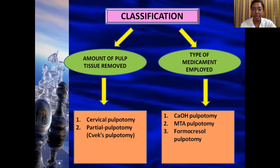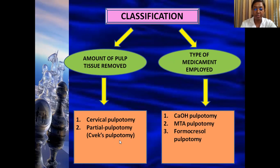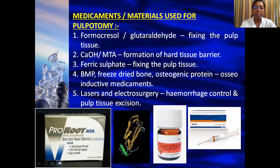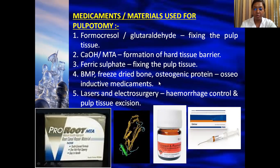Pulpotomy can be classified broadly into two categories: based on the amount of pulp tissue removed, and based on the type of medicament employed. Based on pulp removed, we have cervical pulpotomy, where the inflamed coronal pulp up to the cervical region is completely removed, and partial pulpotomy (also known as CVEK pulpotomy), where only part of the inflamed coronal pulp is removed. Based on medicament used, we have formocresol pulpotomy, MTA pulpotomy, or calcium hydroxide pulpotomy. Materials include formocresol or glutaraldehyde for fixation, calcium hydroxide or MTA for hard tissue barrier formation, ferric sulfate for fixation, bone morphogenic protein and freeze-dried bone as osteoinductive materials, and lasers or electrosurgery for hemorrhage control and pulp tissue excision.